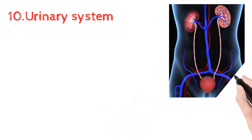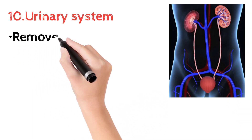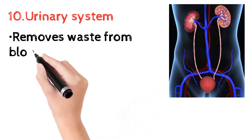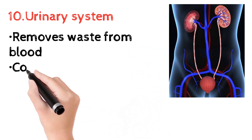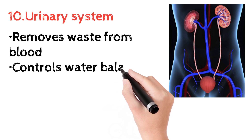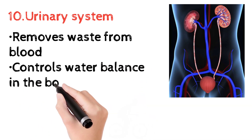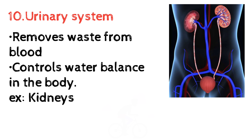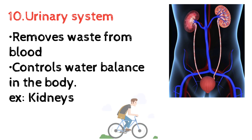The urinary system not only works in excretion, but it also controls water balance in the body. It removes waste from the blood and excretes it. Remember — it controls water balance in the body as well.